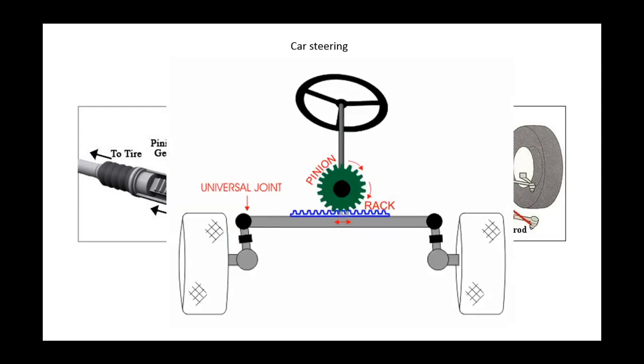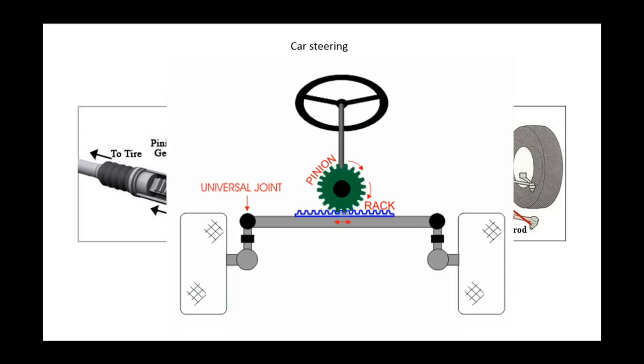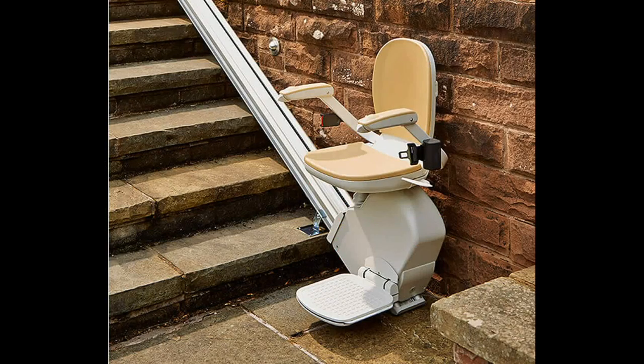And here's a GIF animation showing the process. Here is a stair lift, which uses the rack and pinion, but now the rack is fixed in place, so the pinion, as it turns, is forced to move along the rack, which brings the chair with it.